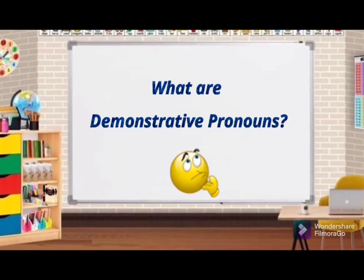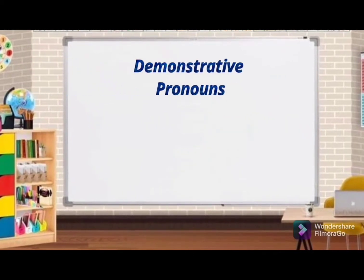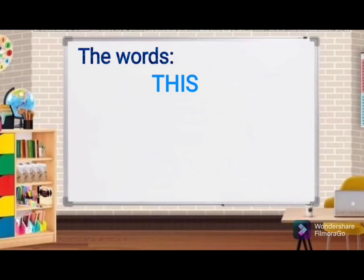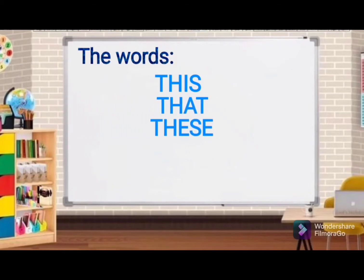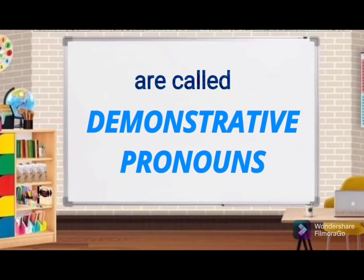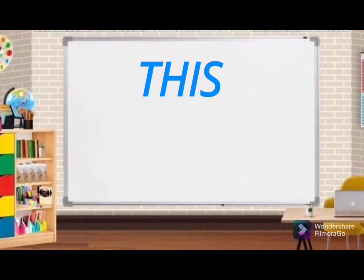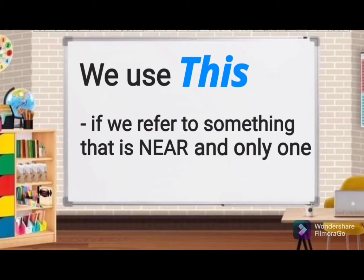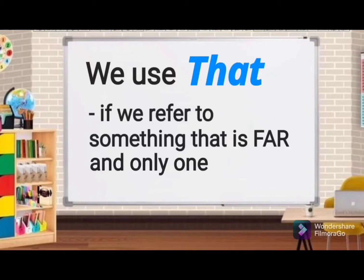What are demonstrative pronouns? Demonstrative pronouns are used to point one or more persons, places, things, or animals that can be near or far from the speaker. The words this, that, these, and those are called demonstrative pronouns. We use this if we refer to something that is near and only one. We use that if we refer to something that is far and only one.